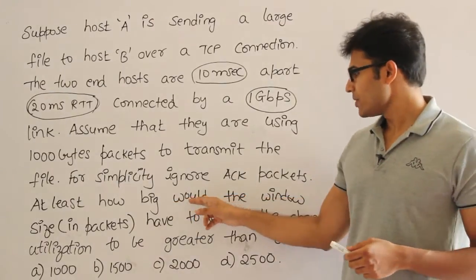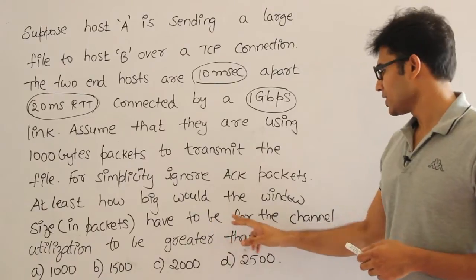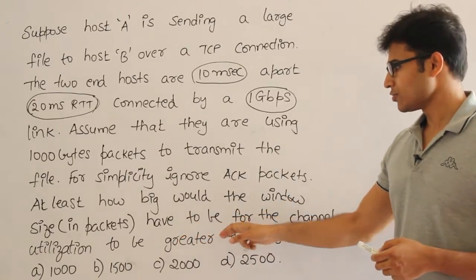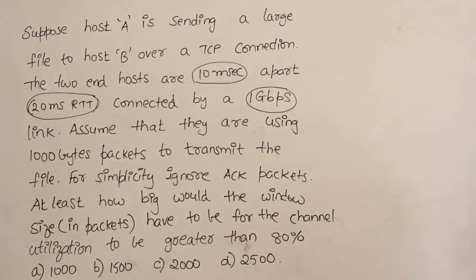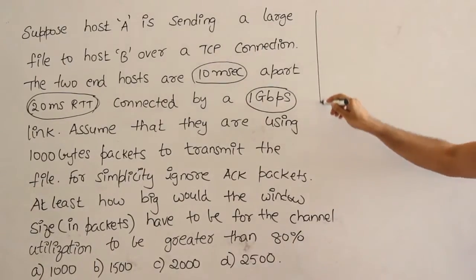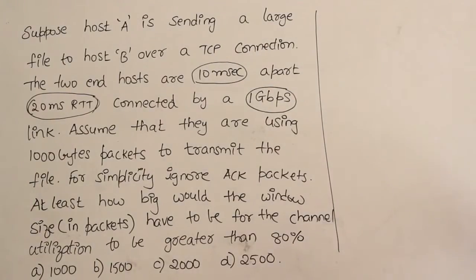At least how big would the window have to be for the channel utilization to be greater than 80%? If you want at least 80% utilization, how big should your window size be? So first let's see what they mean by 80% efficiency.